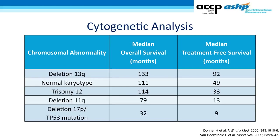This summary table shows the most common cytogenetic abnormalities seen in CLL. Deletion 13q as the sole chromosomal abnormality has the most favorable prognosis — the longest median overall survival and the longest median treatment-free survival. Deletion 11q patients have shorter median overall and treatment-free survival. The worst patients are those with deletion 17p or TP53 mutation, who have very short overall survival and median treatment-free survival of less than one year. These numbers were derived before the use of small molecules, but the prognostic hierarchy remains true.